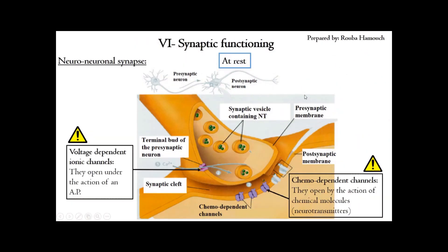Here is a schematic diagram showing the structure of a synapse. We have the terminal bud of the pre-synaptic neuron containing vesicles with neurotransmitters. In green we have the synaptic cleft, and in purple we have the receptors coupled to ionic channels on which the neurotransmitters will bind, as shown in light purple.